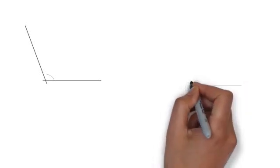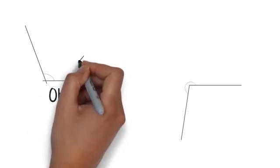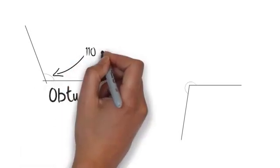Let's look at this example here. This angle is more than 90 degrees. It's 110 degrees, which is more than a right angle. So, if it's more than a right angle but less than a straight line, the name of this angle here is obtuse.